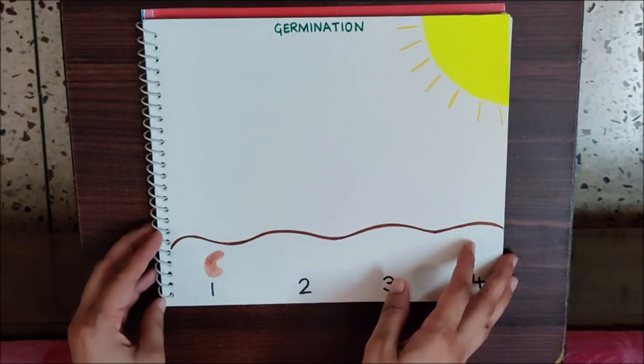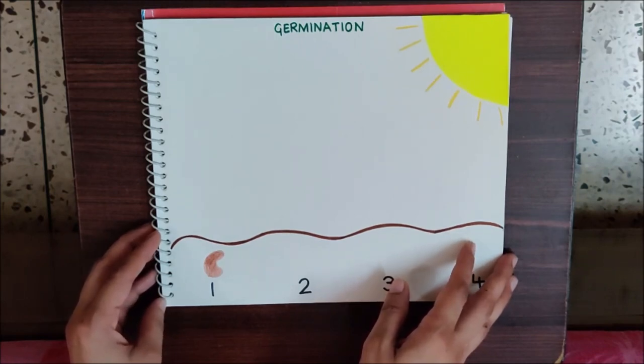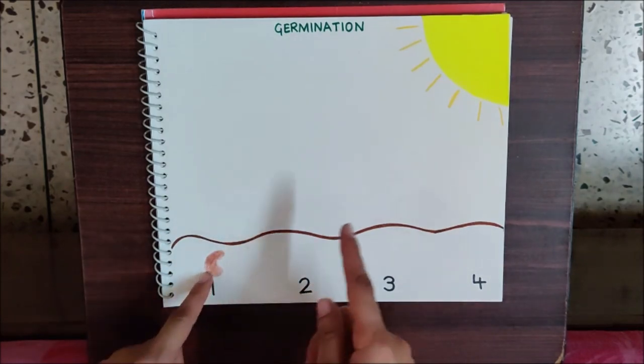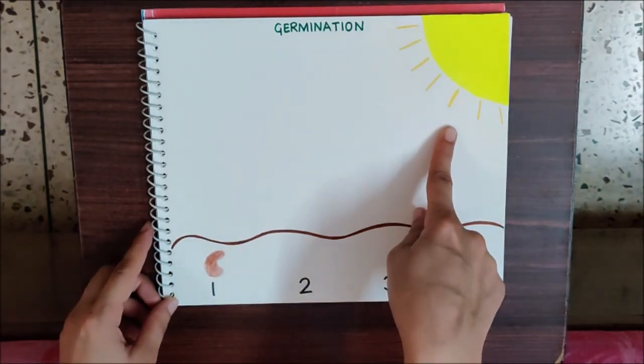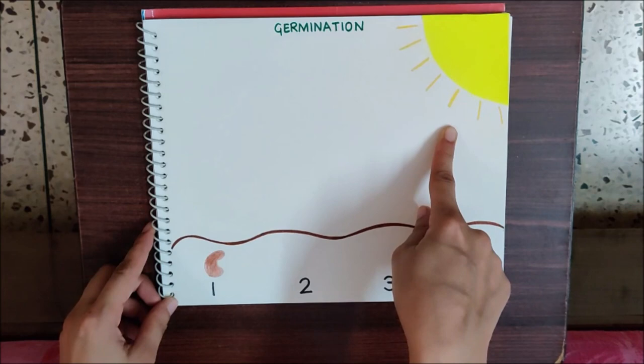Children, what does a plant need to grow? A plant needs water, air, and sunlight to grow. So our seed is already getting sunlight. It is already getting air. We cannot see the air.